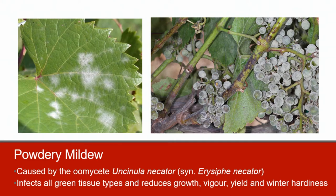Infected and unsporulating berries have a white powdery sugar-like appearance as shown in the image on the right. Infections of purple or red cultivars can result in incomplete ripening and failure to color properly. These berries will have a blotchy appearance at harvest.